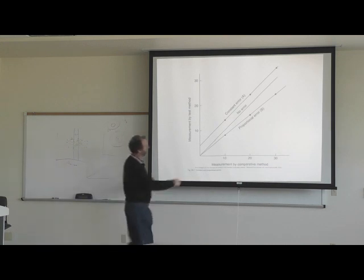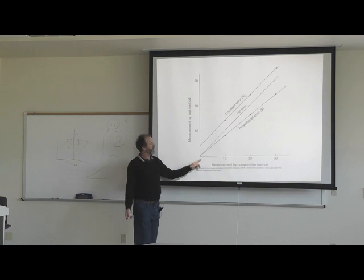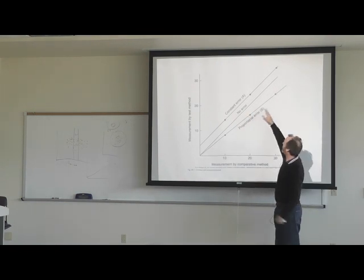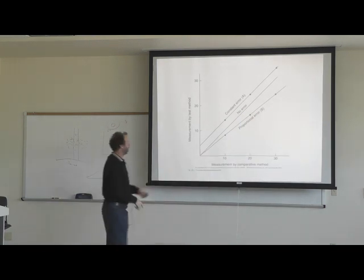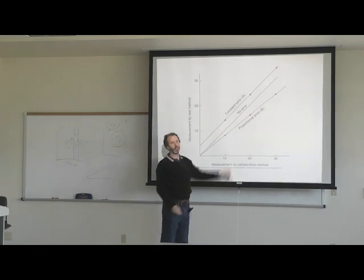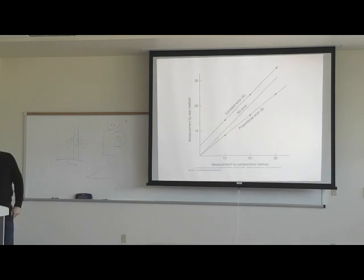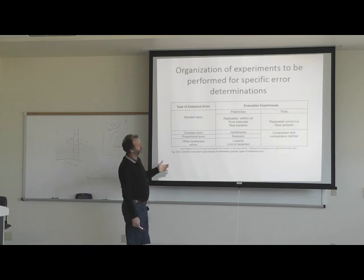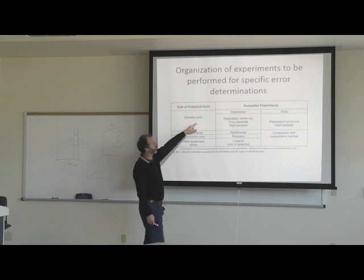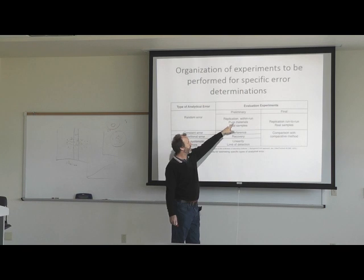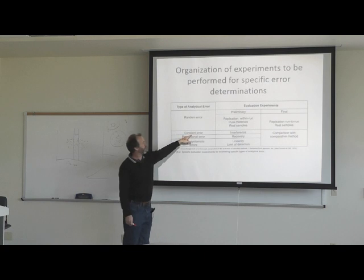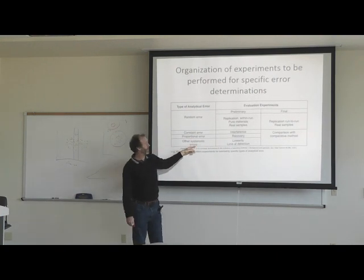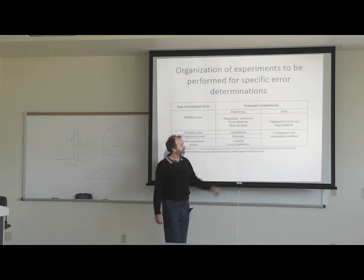Proportional error: when your measurement is low you don't have much systematic error, but as you increase the measurement the systematic error increases too. Constant error never changes — it's always off by that certain amount. To measure these errors experimentally: for random error, do replication within-run experiments using pure materials then real samples. For constant error, do interferent studies. For proportional error, do recovery studies. For other systematic errors, check linearity and limits of detection.